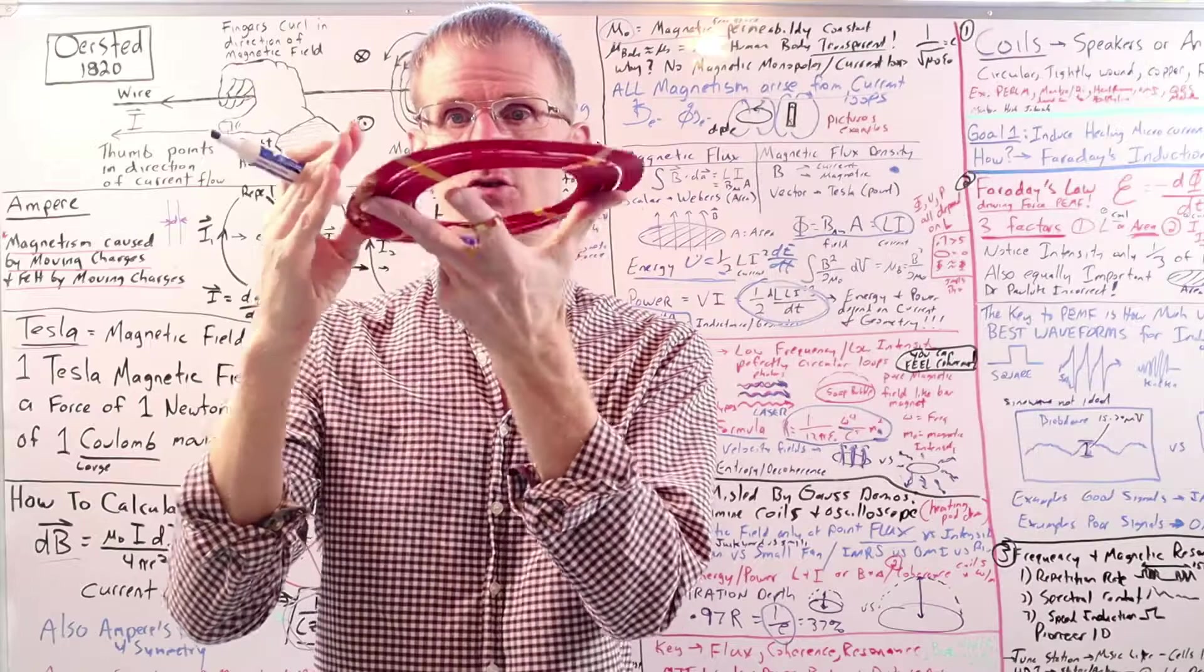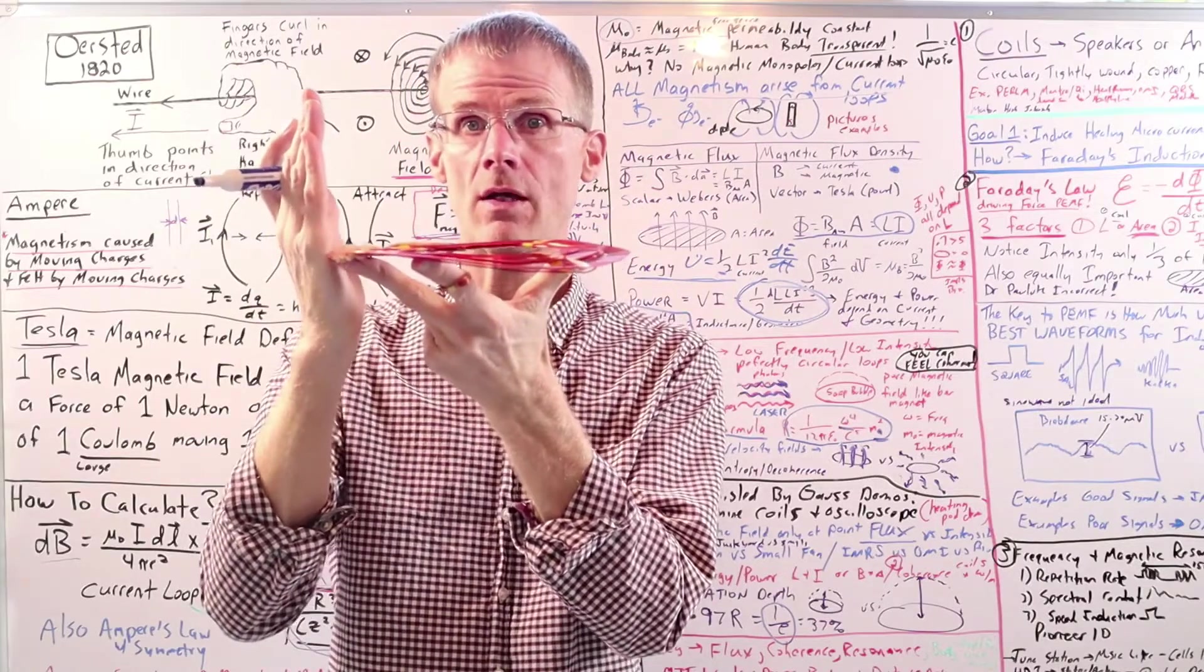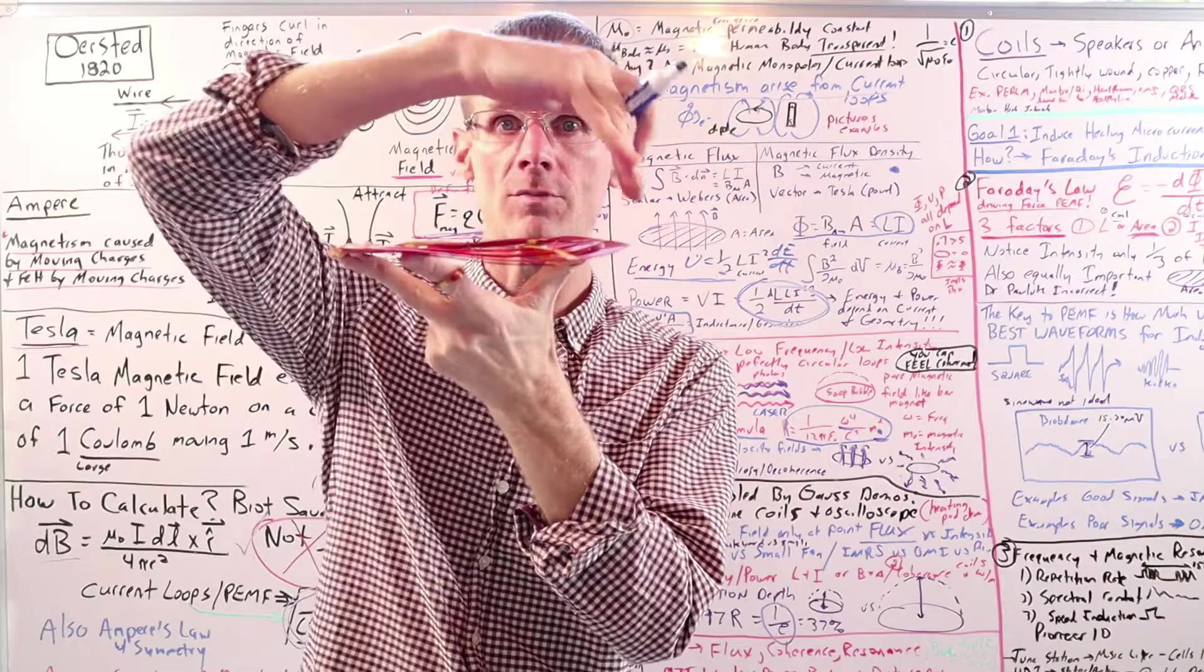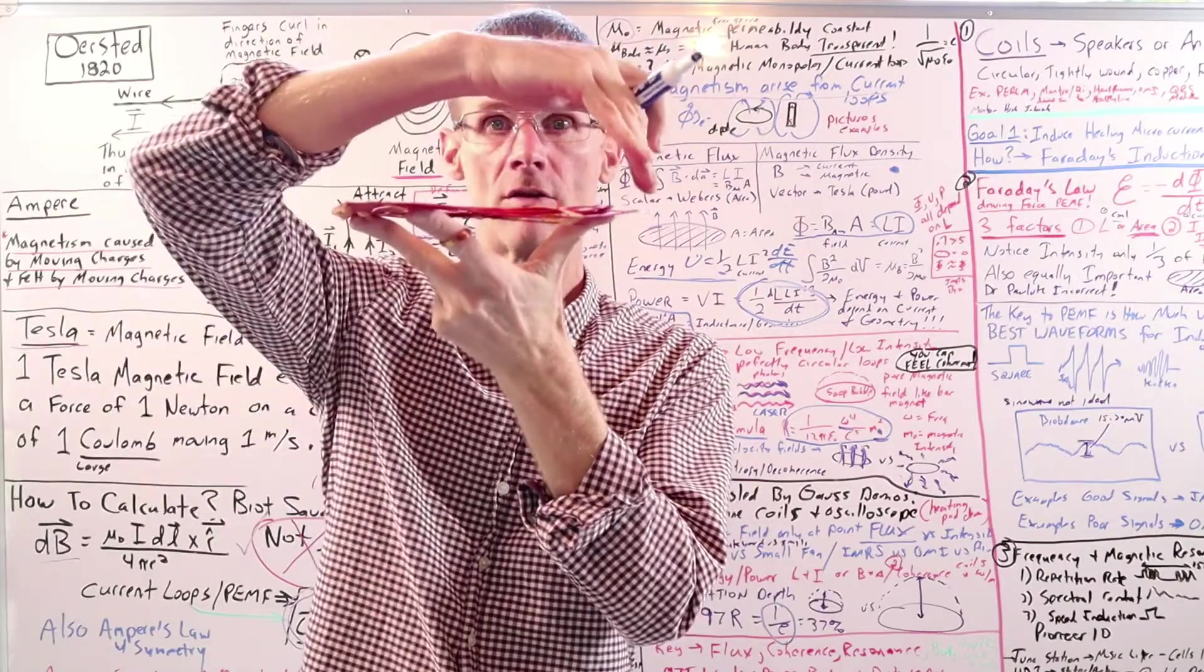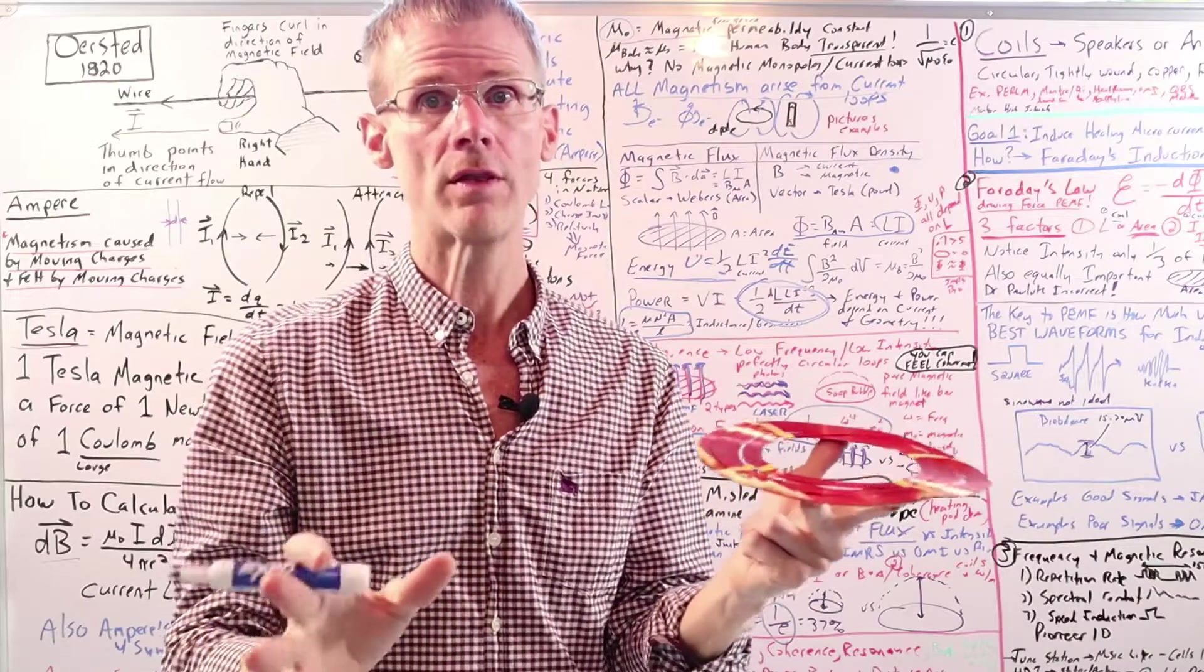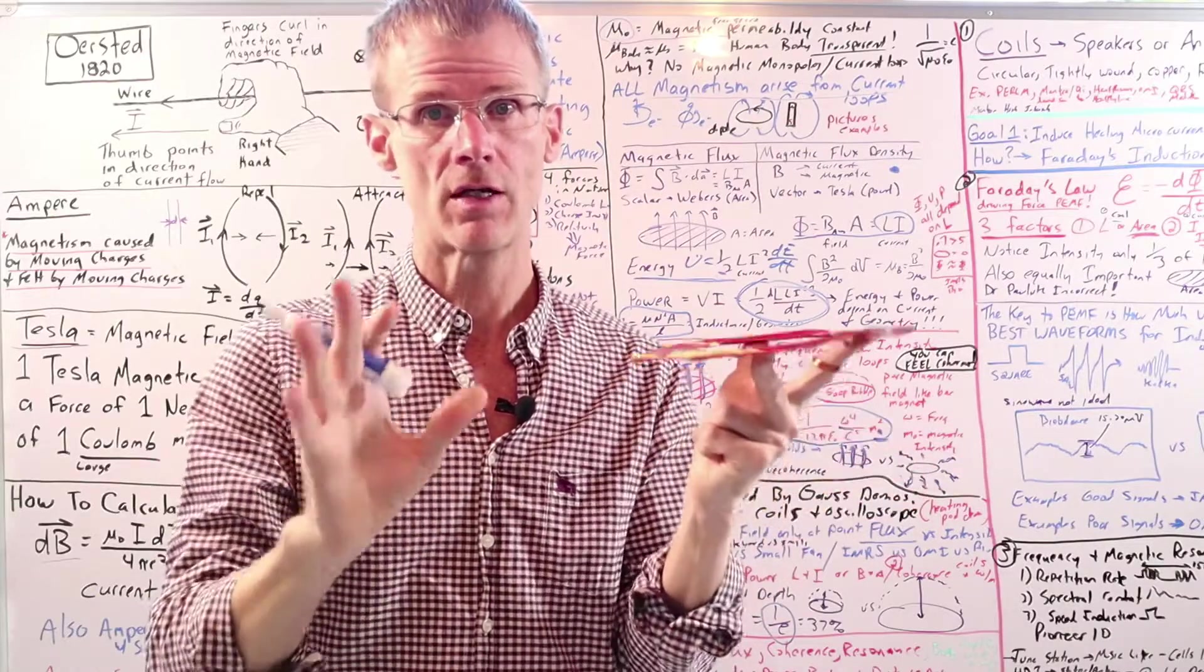So what that means is the penetration depth for an 11 centimeter radius coil, like the IMRS coil, is going to be 11 centimeters. It's basically just imagine turning this into a sphere. So it's going to be a nice hemisphere of energy that penetrates well into your body. Don't think that you need high power for penetration. That's not true.